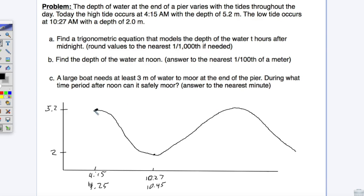We need to find a trig equation to help us figure this out. I'm going to use cosine. The phase shift is going to be 4.25 hours. The period, the difference between high tide and low tide, is 10.45 minus 4.25, that's 6.2. But that's halfway, so we multiply that by 2. So the period is 12.4. We have a period and a phase shift.